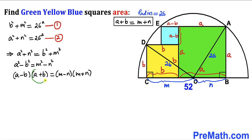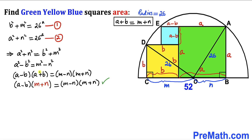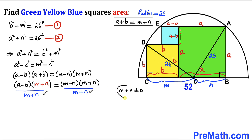We know that a + b = m + n, so we replace a + b with m + n on the left side. Dividing both sides by m + n (where m + n ≠ 0), the m + n terms cancel, leaving us with a − b = m − n. Let's label this as equation number three.